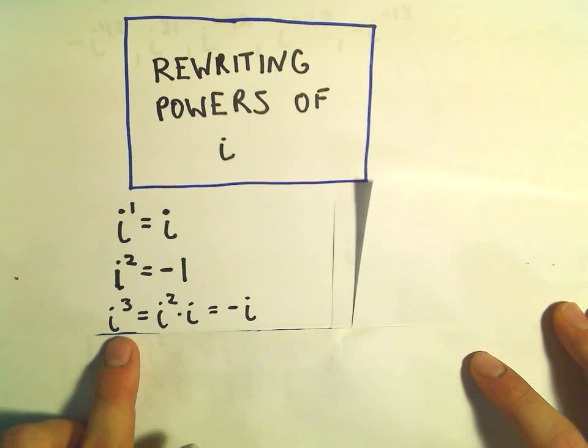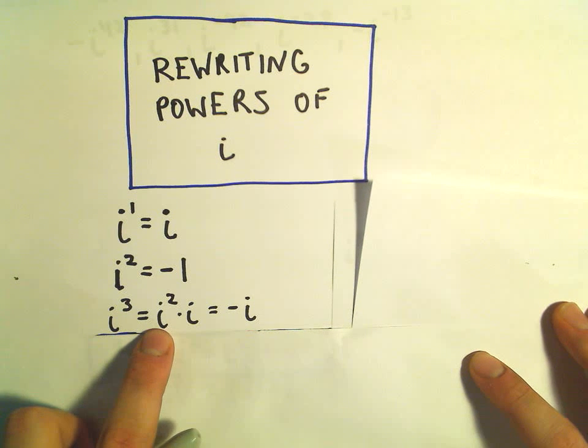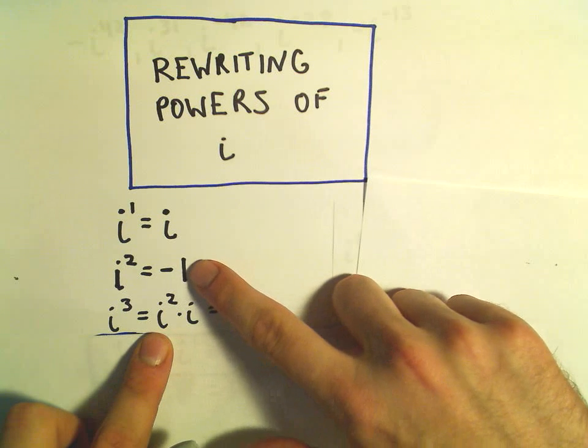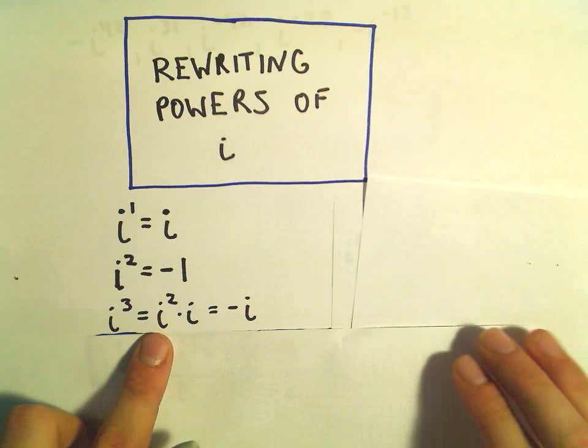If you think about i to the third power, we can write that as i squared times i. We know that i squared is negative 1, so if we multiply that by i, we'll just get negative i.